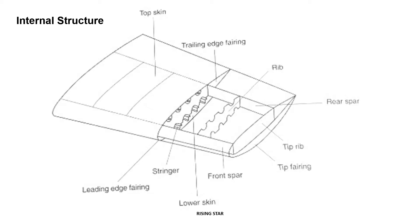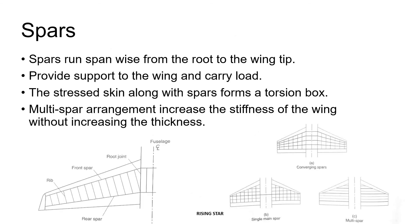Most aircrafts have two spars: the front spar and the rear spar. As you can see in the picture on the left hand side, the spars run span-wise from the root of the wing to the tip. They provide support to the wing and carry a fair share of load. The stressed skin along with the spars form a torsion box.